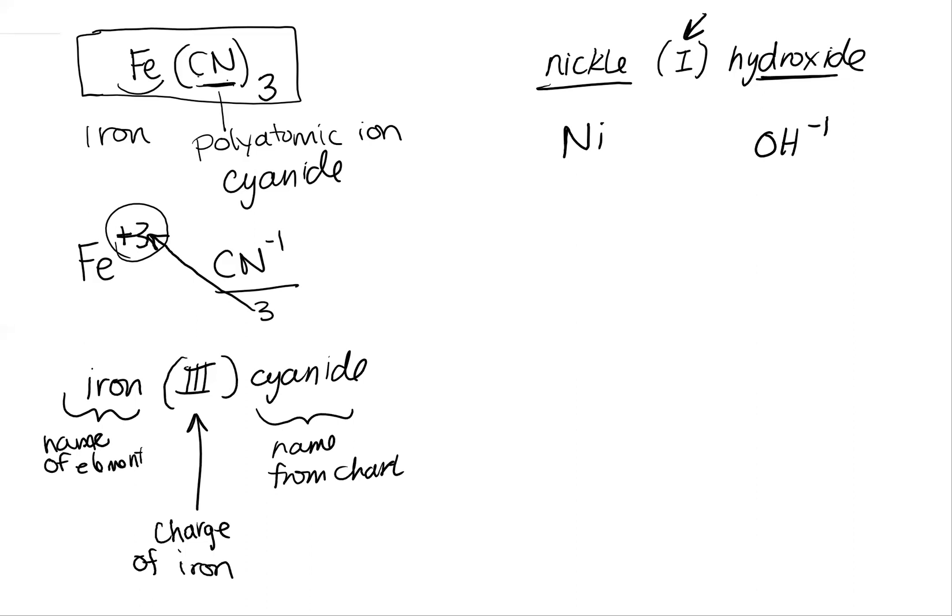Now, how these will combine really depends on the charge of that nickel. So I use this Roman numeral one to determine that this is a plus one. So now I need to look at how will plus one and negative one combine. Well, they should combine in a one to one ratio to equal zero. So this will be nickel hydroxide.